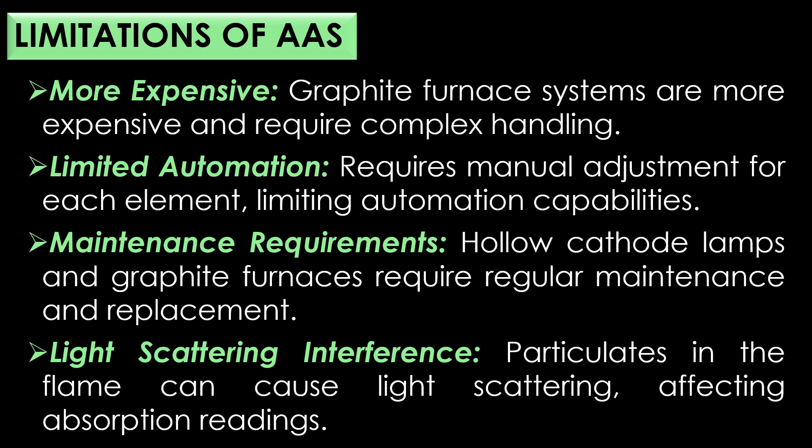More expensive: graphite furnace systems are more expensive and require complex handling. Limited automation: AAS requires manual adjustments for each element, limiting automation capabilities. Maintenance requirements: hollow cathode lamps and graphite furnaces require regular maintenance and replacement.